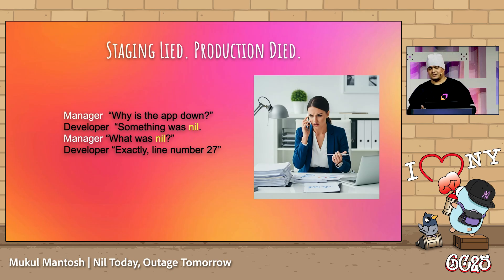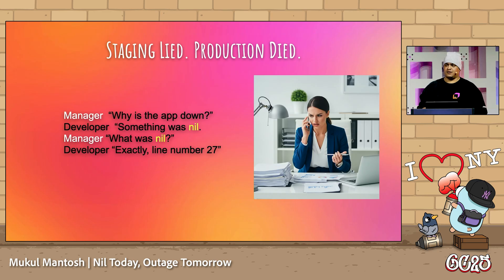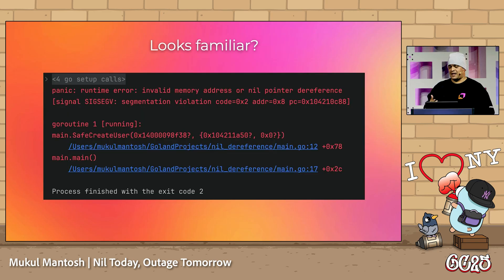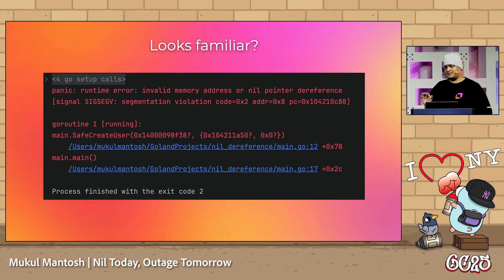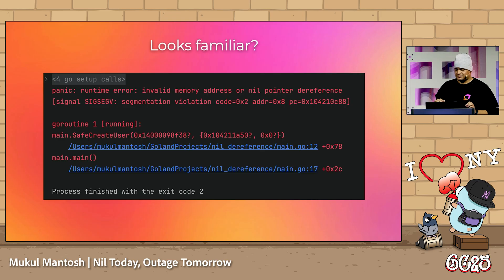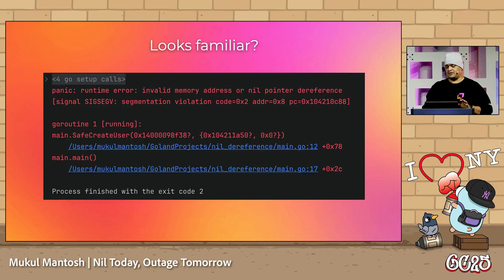What went wrong? Alex immediately looked into the logs and found something he never expected — a panic message: invalid memory address or nil pointer dereference. I bet every Go developer has run into this issue at least once. Or, let's be real, probably a ton of times. Alex found something in the code that seemed odd.